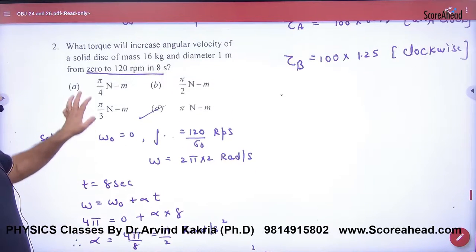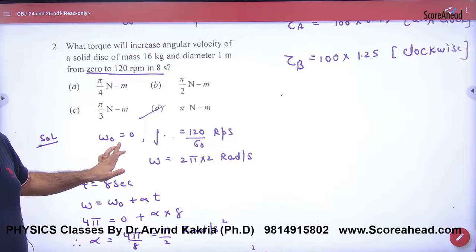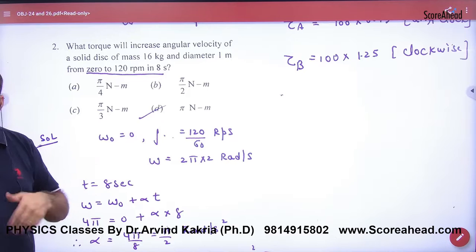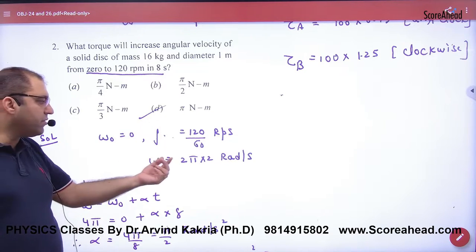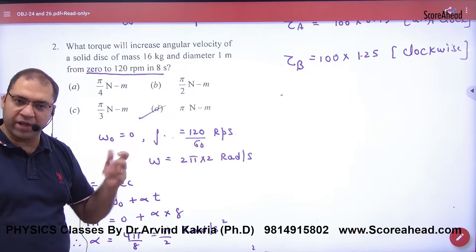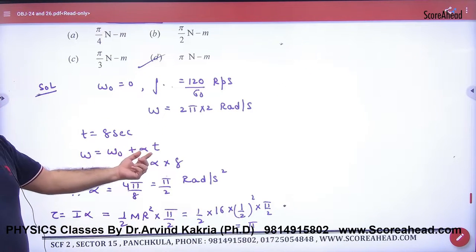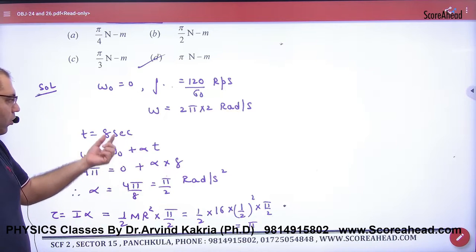For alpha to take off, this disk started from rest. Omega not is equal to zero. Frequency is 120 rpm, 60 divided by RPS. And if you multiply with two pi, then omega will come. So omega not comes, omega comes. So omega is equal to omega not plus alpha t. Omega knows, omega not knows, and time knows. What happened here?